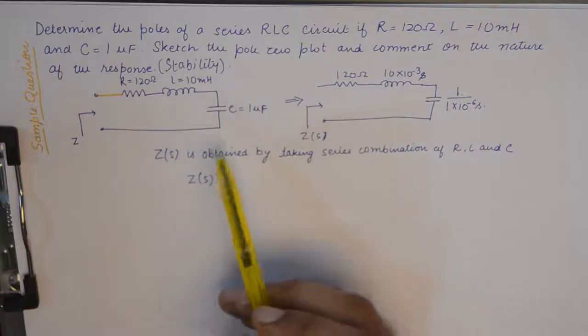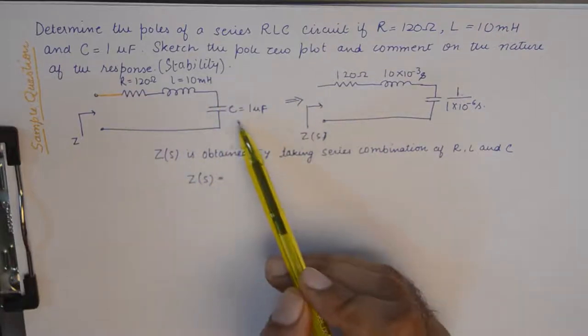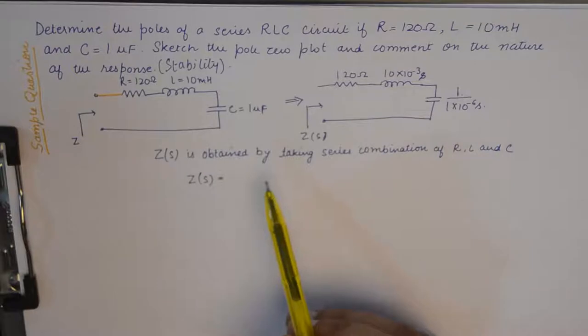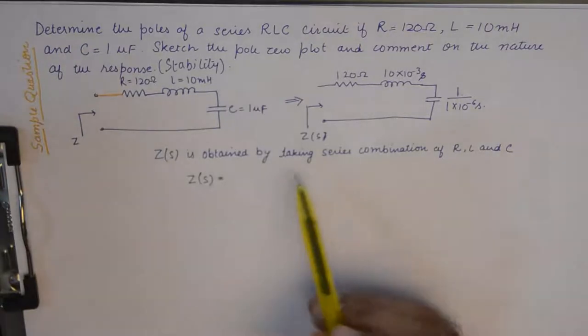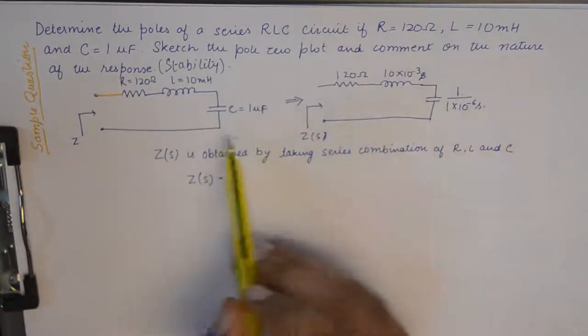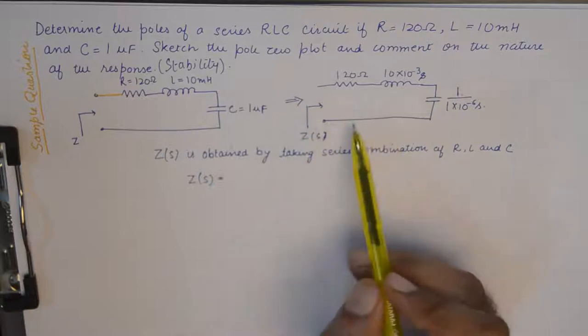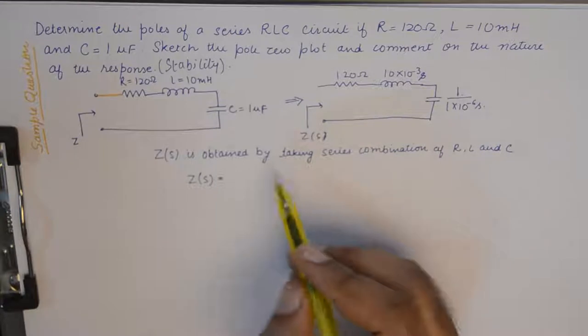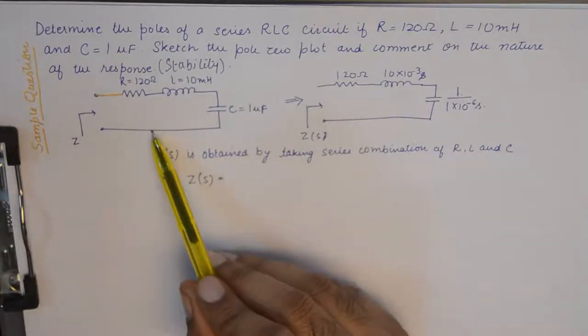So we could have found any other parameter like admittance, or if you wish to find any other thing, if you want to take load from here and if you want to find transfer function, you could do that as well. But that would make the question unnecessarily lengthy, so we'll go ahead and find the driving point impedance function, and that will be the series sum of R, L, and C.